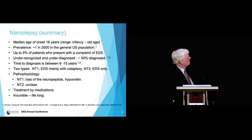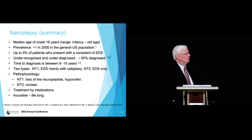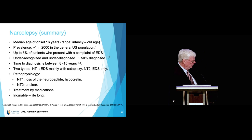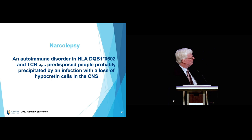In summary: narcolepsy has a median age of onset of 16 and occurs in about 1 in 2,000 of the general population. About 50% are undiagnosed. The pathophysiology of NT1 is loss of hypocretin; for NT2 we still don't know, though some patients may have a more minor loss. It's an incurable lifelong disorder treated by medication — an autoimmune disorder in people with HLA-DQB1*0602, precipitated by an infection causing loss of hypocretin cells.